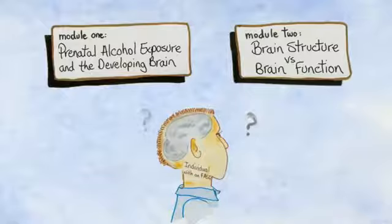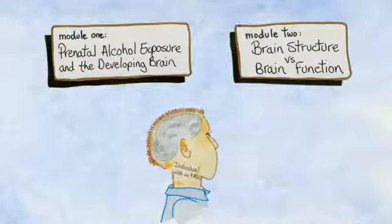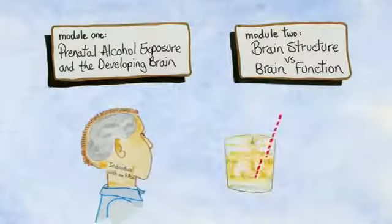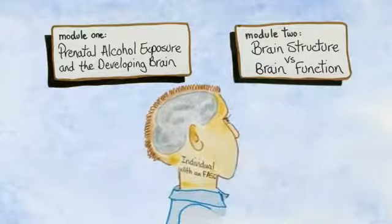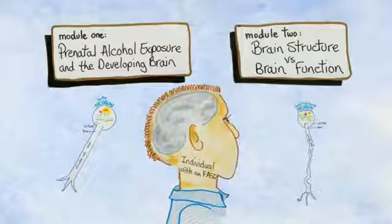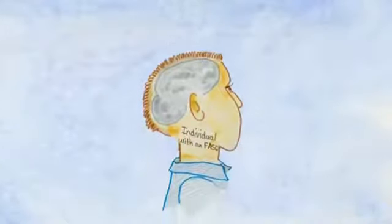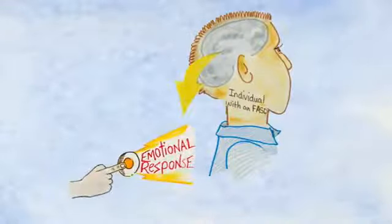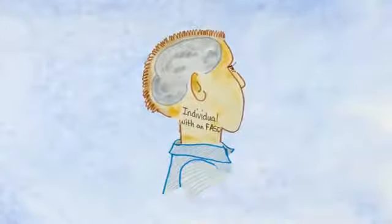So far, we've learned in Module 1 and 2 that brain function is hard to predict due to the diverse nature of the impact of prenatal alcohol exposure, and communication within the brain is impacted because of altered communication pathways. What we would also like you to consider when supporting individuals with an FASD is the way in which emotional regulation is impacted. We will discuss how the brain's regulatory system may be affected.